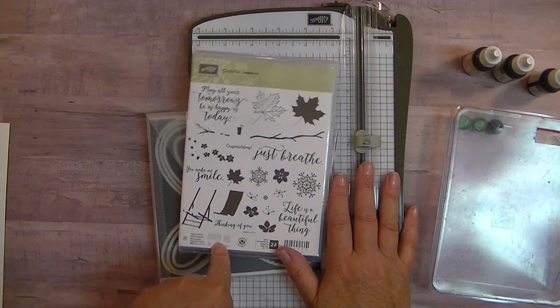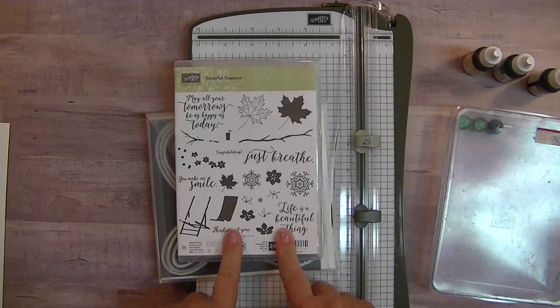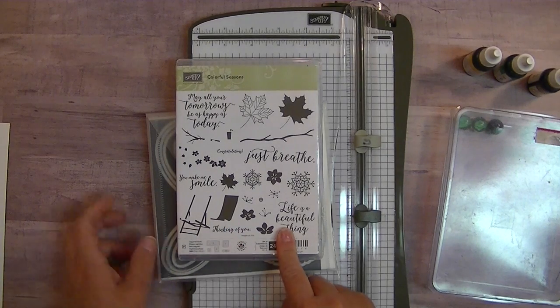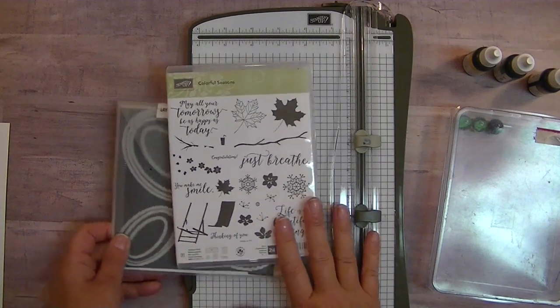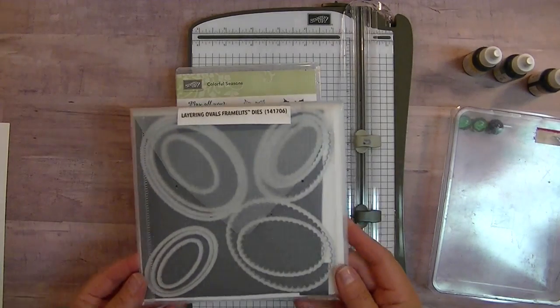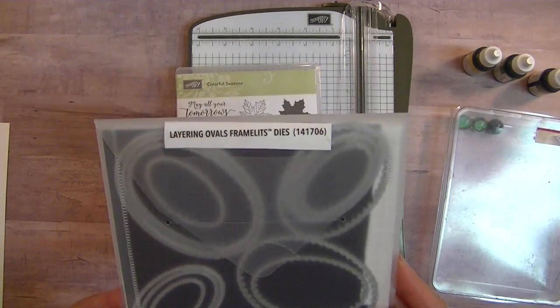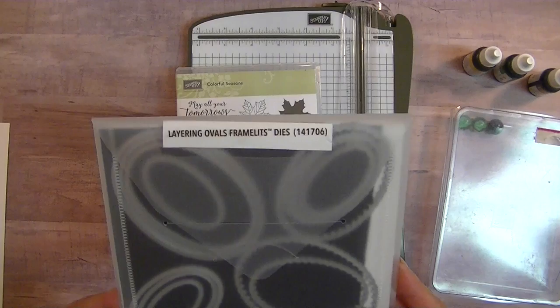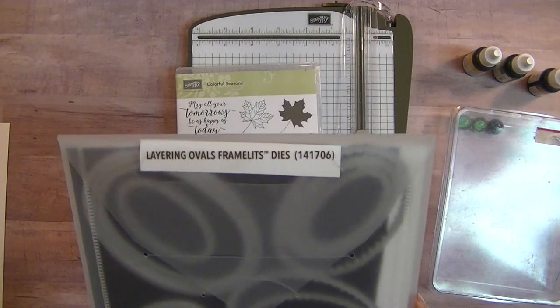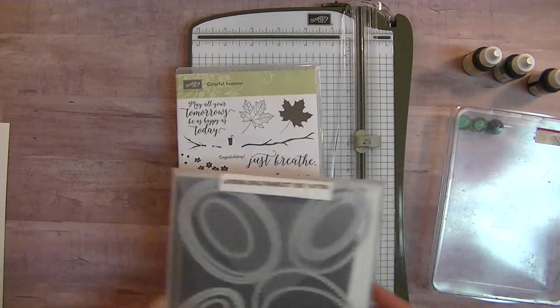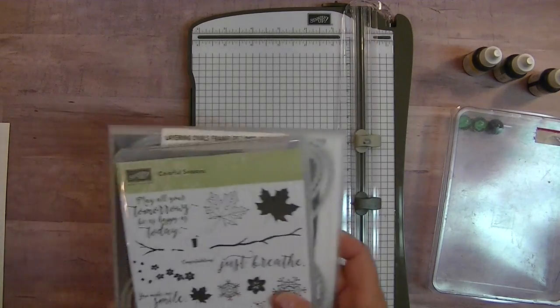But I am using my favorite stamp set. Again, this is Colorful Seasons. Love, love, love it. Something for every season. And then I am also using my Layering Oval Framelits. And here is the number for those. So that's the stamp set and dies I'm using.